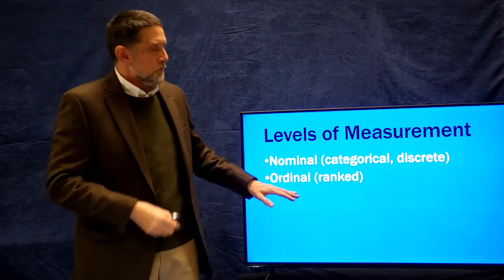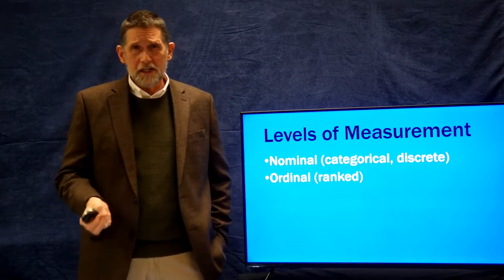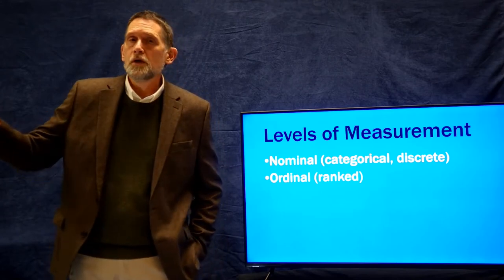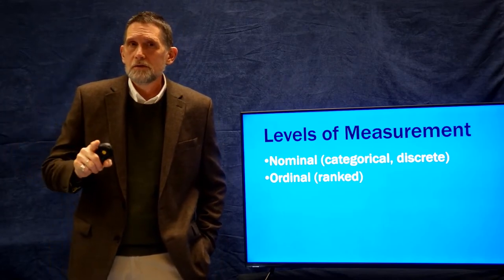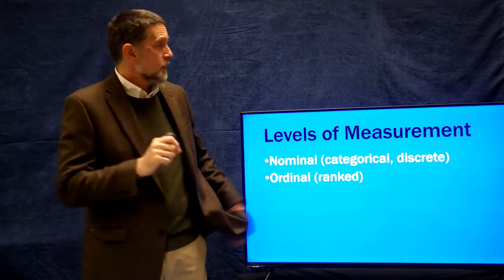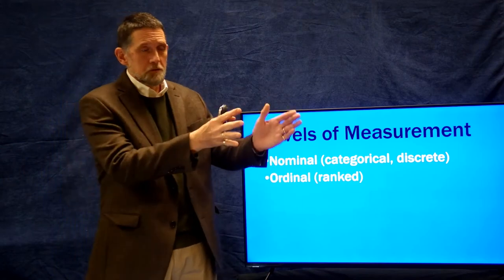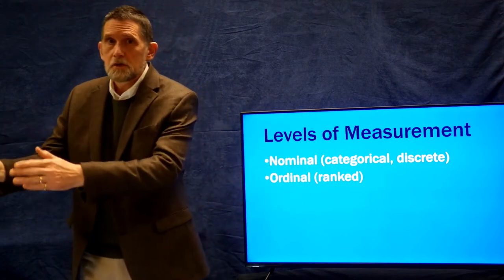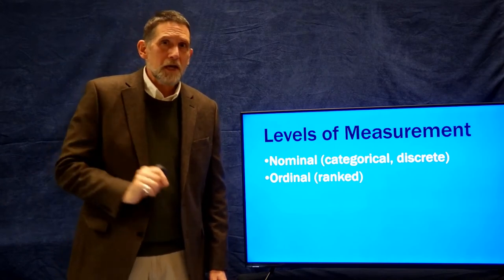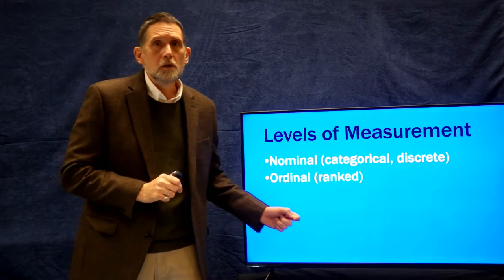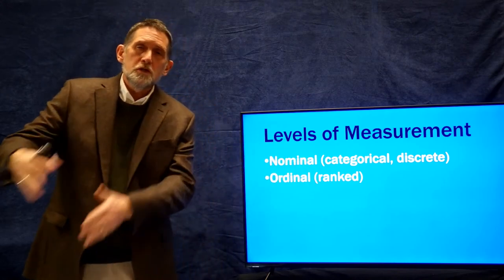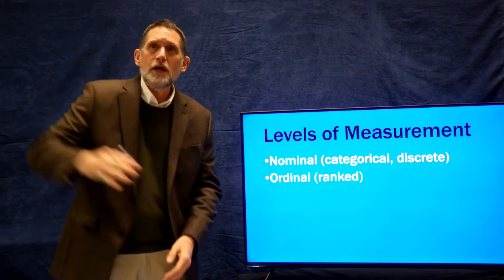The next level is called ordinal, or ranked data. Ordinal data has a starting point and goes in order. Freshman, sophomore, junior, senior are categories — there's a category of freshman, a category of senior — so that's a nominal variable. But it can also be seen as ordinal, because freshman comes before sophomore, which comes before junior, which comes before senior. There is a rank to them.